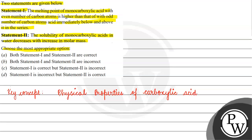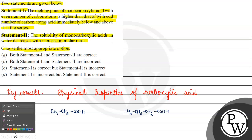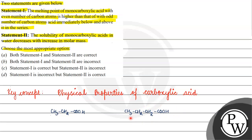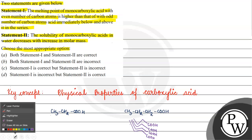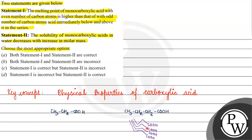If we talk about physical properties of carboxylic acid — we have monocarboxylic acid with even number of carbon atoms. If we have even number of carbon carboxylic acid, it will be easily packed. Its packing efficiency is much more, and this is why its melting point is more.